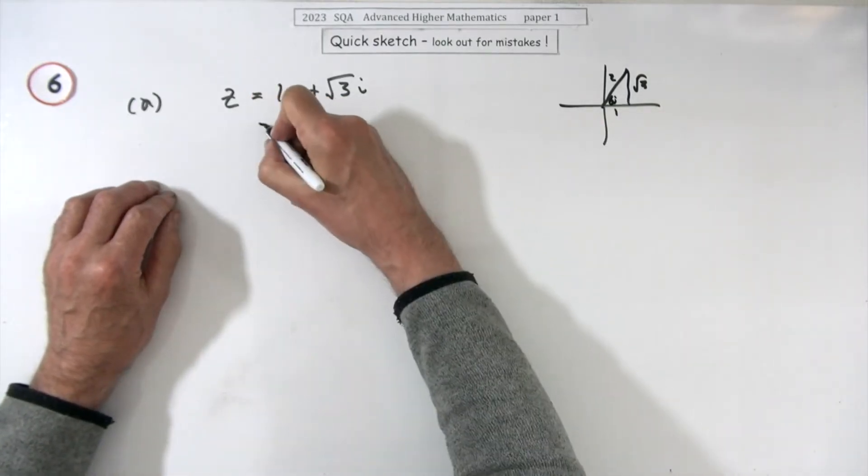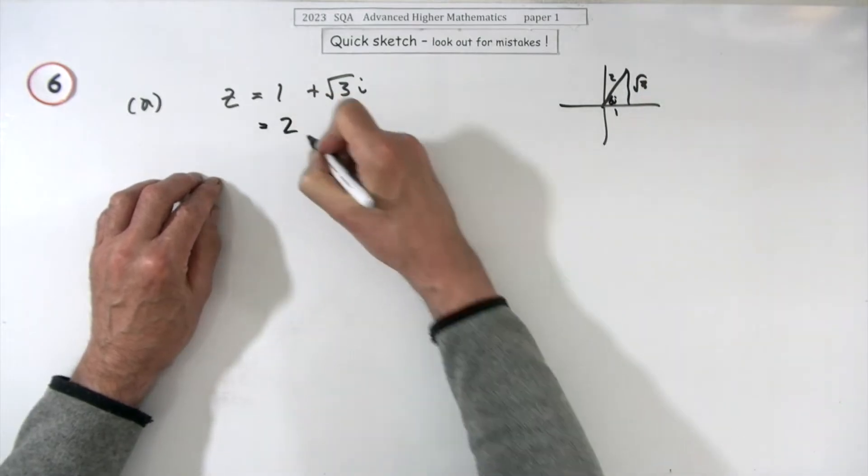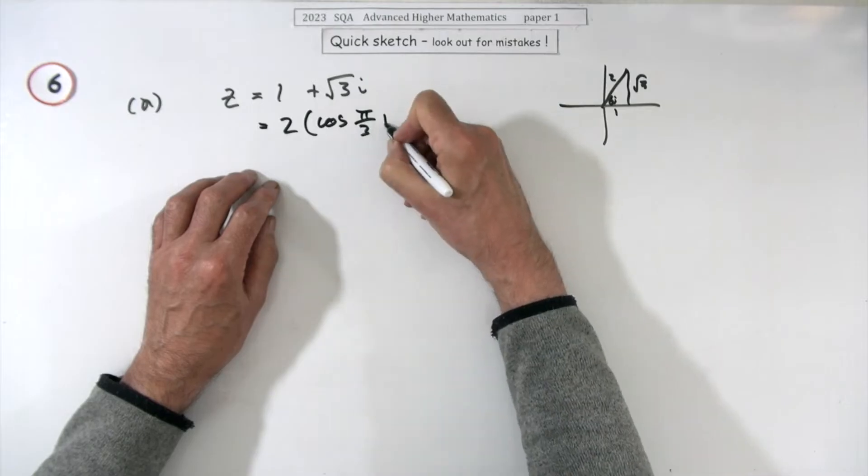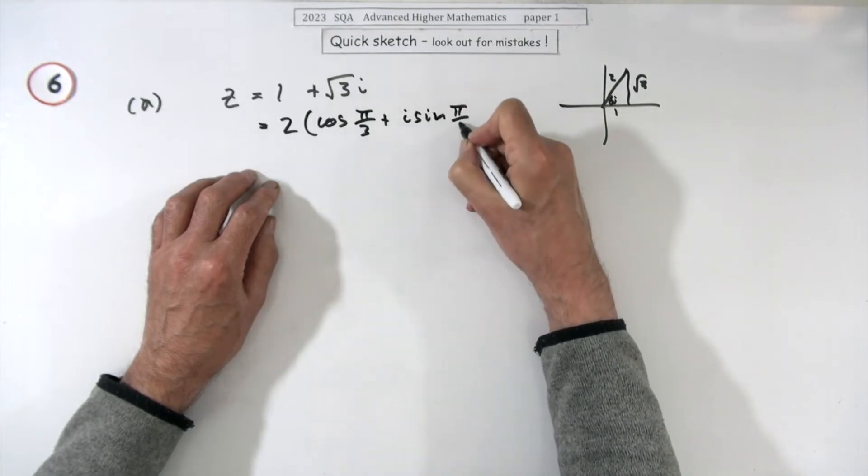So that will give you, that will be two times, cos 60 is π upon three, cos π upon three plus i sine π upon three.